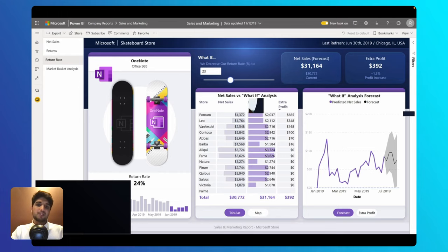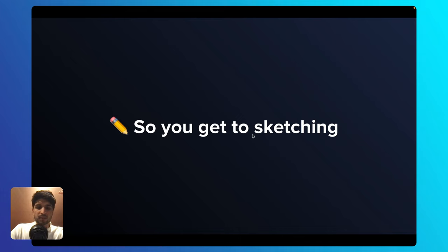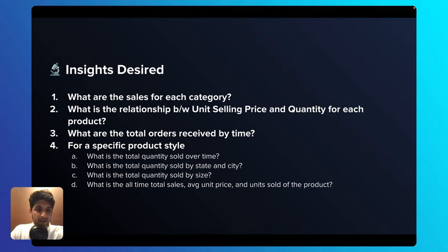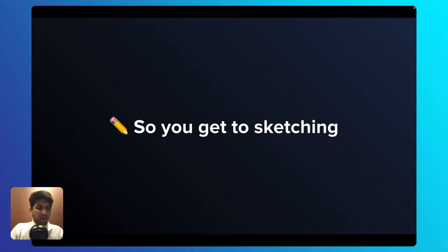The insights she desires are: sales for each category; the relationship between unit selling price and quantity for each product; total orders received by time; for a specific product style, total quantity sold over time, by state and city, and by size; and total sales, average unit price, and average units sold for a particular product. However, you don't immediately jump into Power BI — sketching on paper first takes maybe five minutes, allows stakeholder feedback, whereas building in Power BI could take 20 minutes to an hour per visualization.